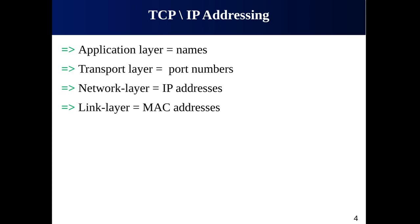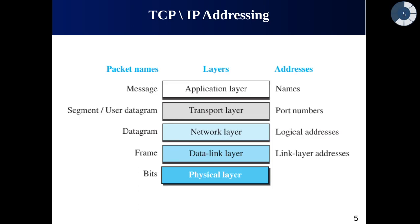We have different types of addresses at each layer. At the application layer we use the term 'names.' At the transport layer the addresses are known as port numbers. At the network layer we have IP addresses, and at the data link layer we have MAC addresses. At the physical layer we deal with individual bits. It may seem like we need five pairs of addresses, but we only have four types because the physical layer does not need addresses — the unit of data exchange there is a bit, which cannot have an address.